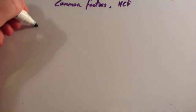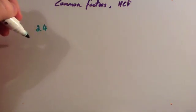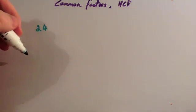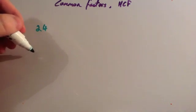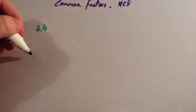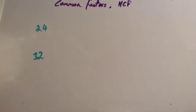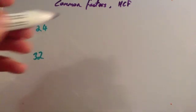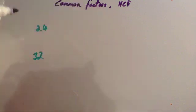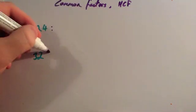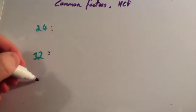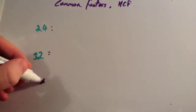Let's do 24 and 32. So let's find the common factors for these numbers. Before you find the common factors, what you need to do is find the factors of the numbers themselves. So let's do the factors of 24 first of all.